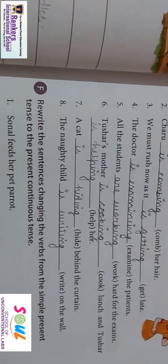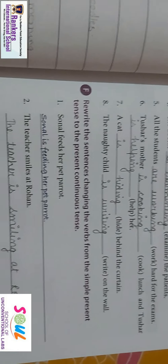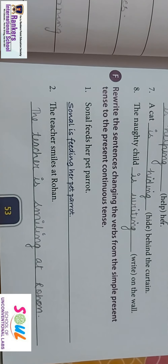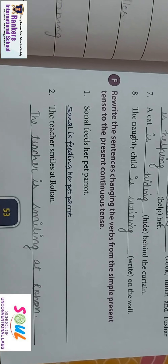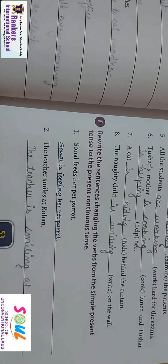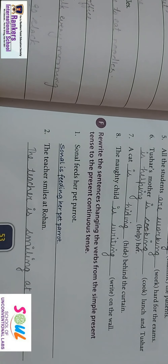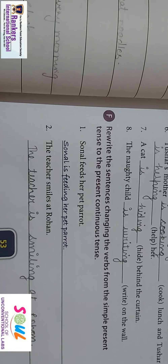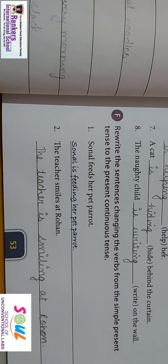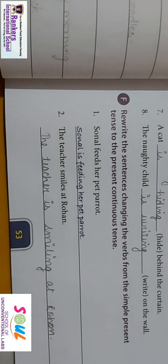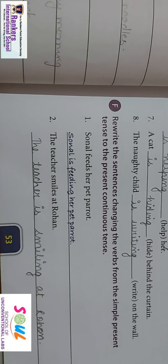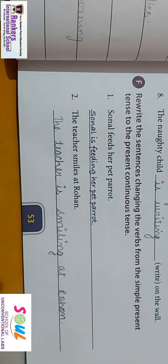Now rewrite the sentences, changing the verbs from simple present tense to present continuous tense. Sonal feeds her pet parrot — you have to change this. 'Is' is the helping verb and 'feed' is the main verb, so it becomes: Sonal is feeding her pet parrot. The teacher smiles at Rohan — Rohan par smile kar raha hai — so it becomes: the teacher is smiling at Rohan.